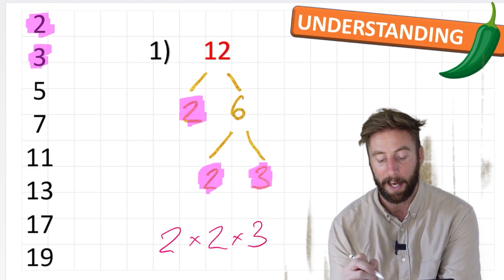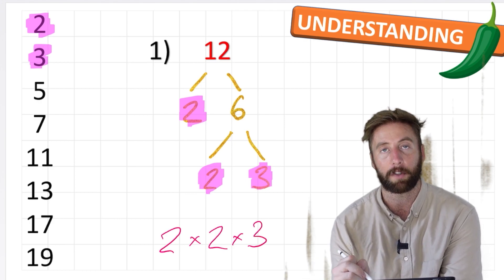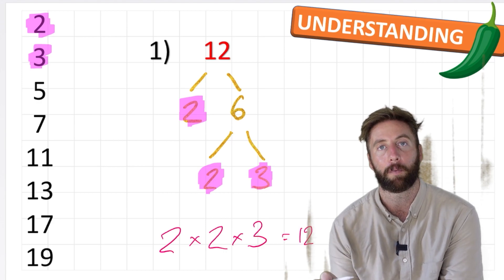2, 2 and 3. And if I multiply 2 times 2 is 4 times 3 is 12. Therefore, we know we've got it right.